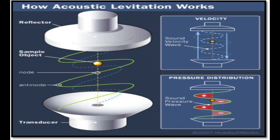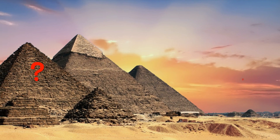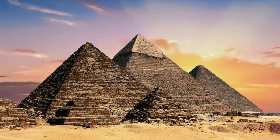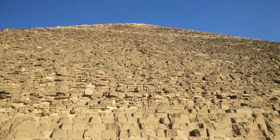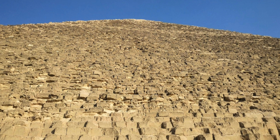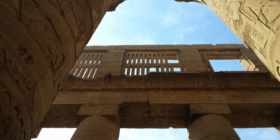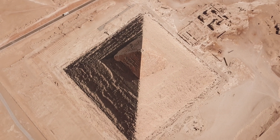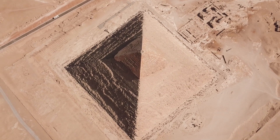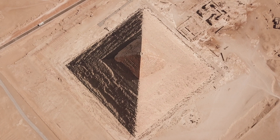This force is directly proportional to the intensity of the sound waves, and inversely proportional to the distance between the object and the source of the sound waves. But why is this similar to the construction of the pyramids? The pyramids were built using massive stones that weighed up to 80 tons each. And yet, somehow, the ancient Egyptians were able to lift these stones to great heights and place them precisely in their correct positions — it's almost as if they had some advanced kind of acoustic levitation technology at their disposal.